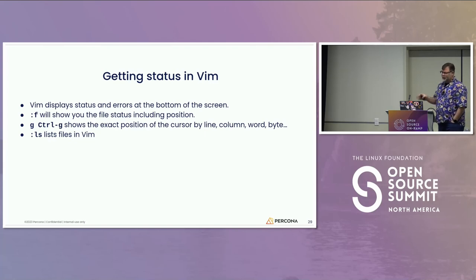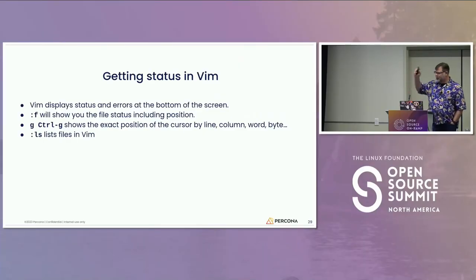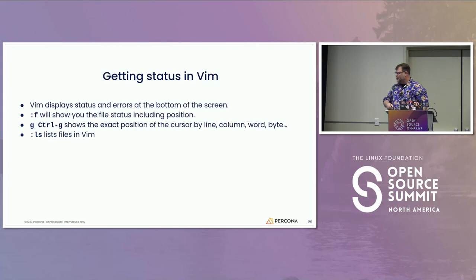If you want status of what you're doing and where you are in VIM, it shows a line at the bottom of the file giving you status. :f will show you the file status including the cursor position. G Control G shows you the exact placement of the cursor by line, column, and byte. :ls will list all the open files in VIM.